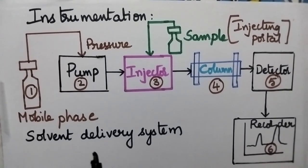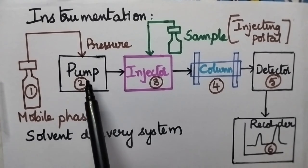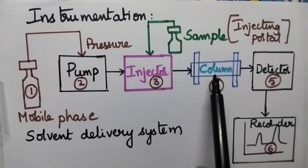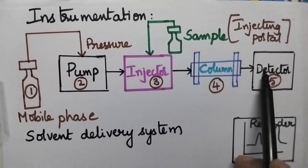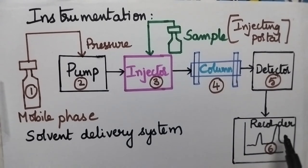HPLC instrumentation consists of six components: solvent delivery system, pump, injector, column, detector, and recorder.